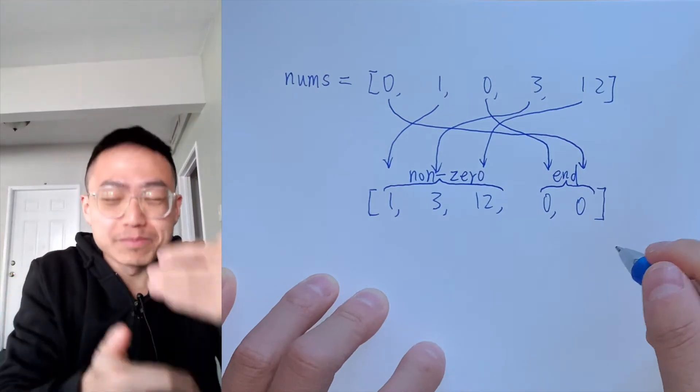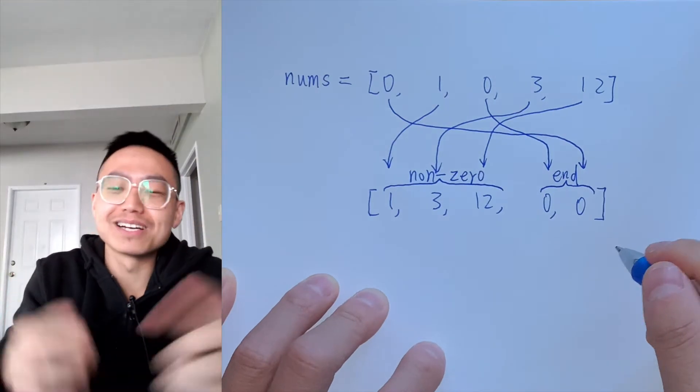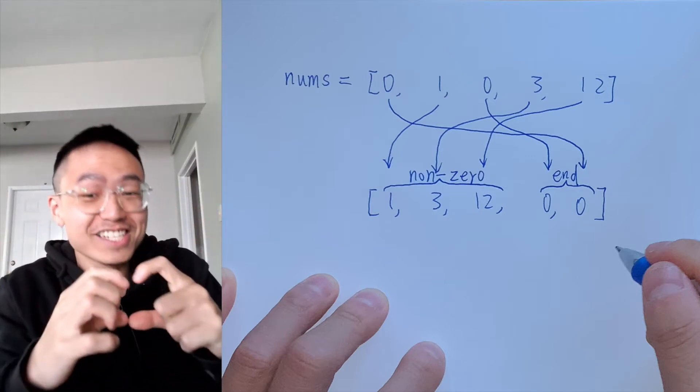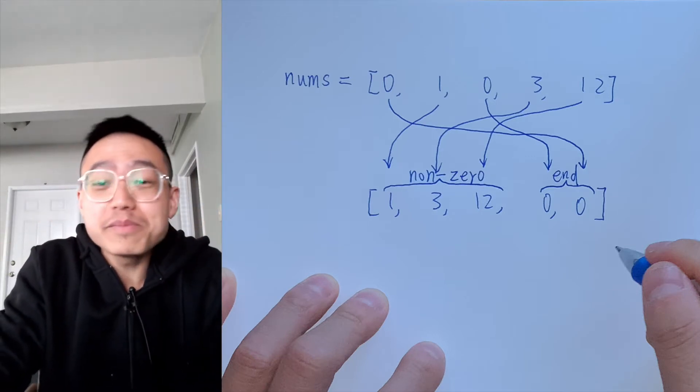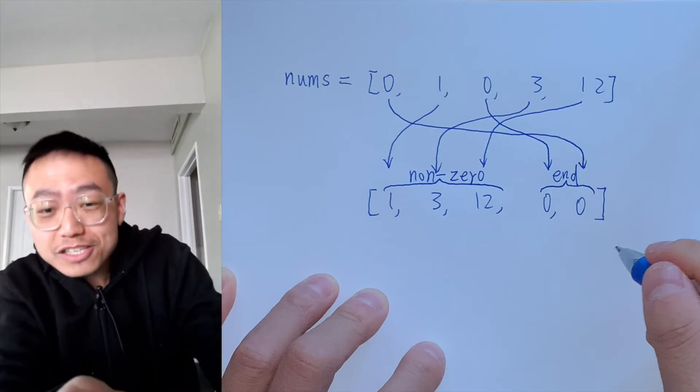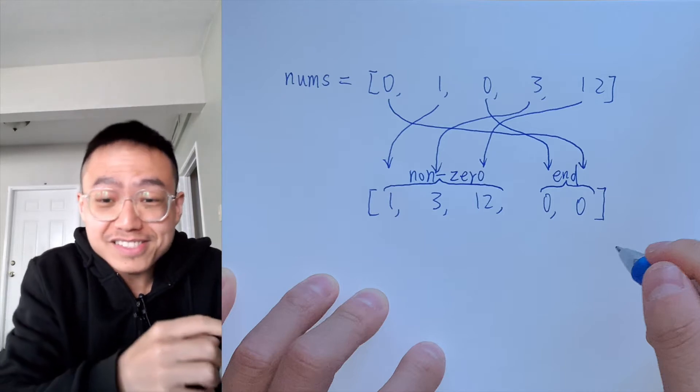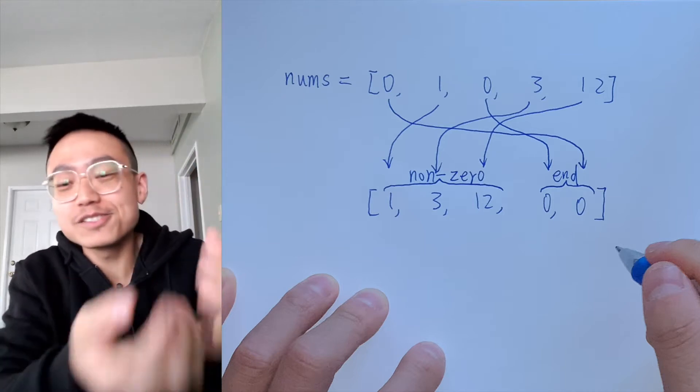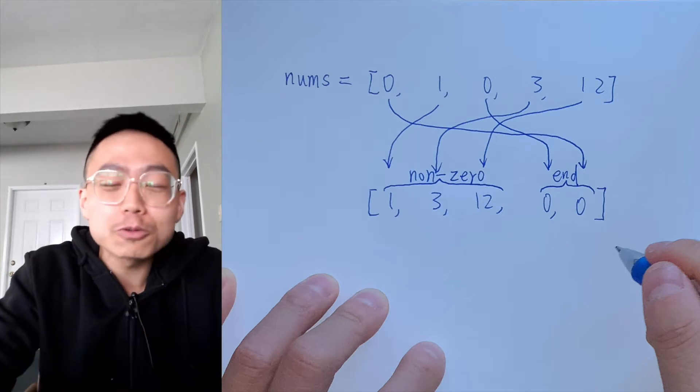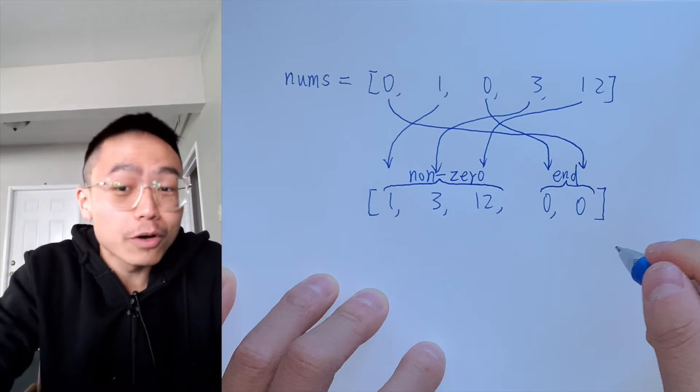This question comes under a broad category of array transformation. This category is the meat of tech interviews, mostly because arrays are such simple and easy to use as a data structure. Traversal or representation doesn't require any boilerplate code.